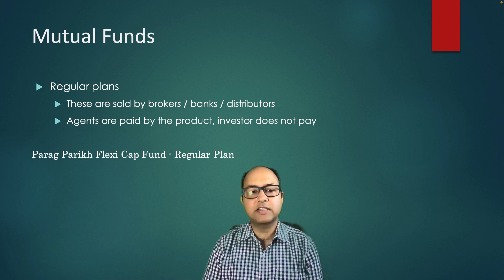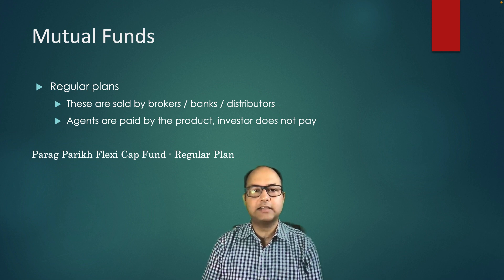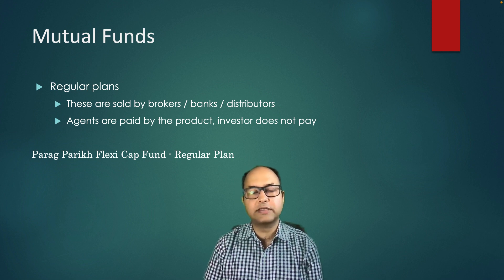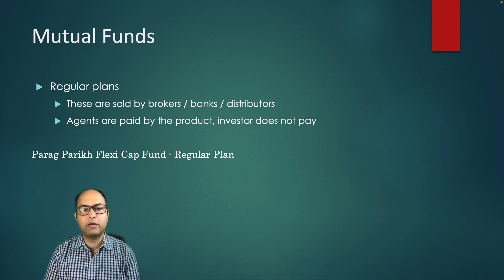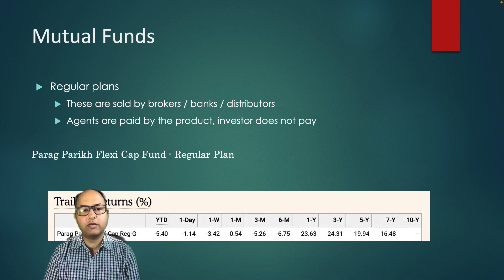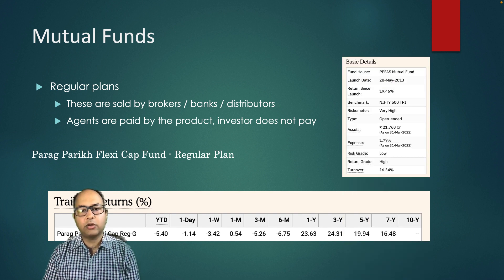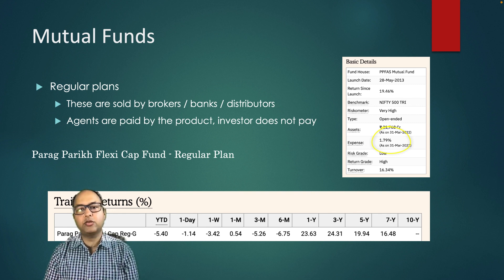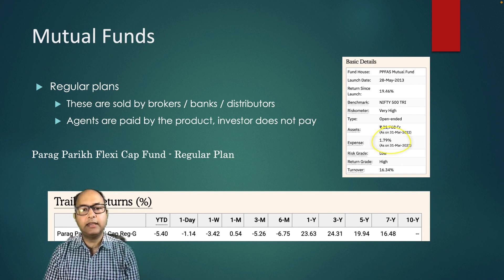This is the regular plan of Parag Parikh Flexi Cap Fund — one fund I watch very closely. This is only for example and not a recommendation; you have to see your specific situation. The trailing five-year return is close to 20 percent. The expense ratio is 1.79 percent, which is the latest number — that is the expense you pay to the mutual fund house, out of which payment is made to these agents.